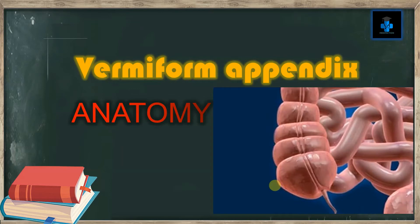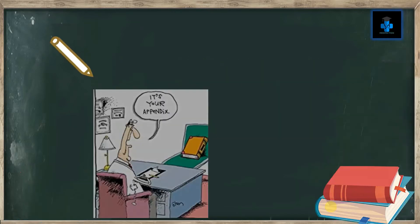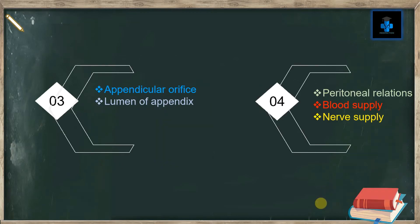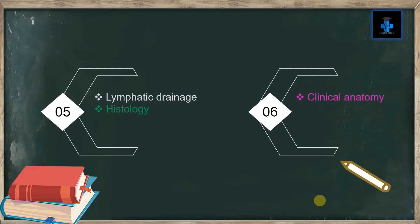Hey guys, welcome to Medifaction. Today let's learn about the anatomy of the vermiform appendix. The appendix, or vermiform appendix, is a muscular structure attached to the large intestine in the human body. In this video, I'm going to enumerate an introduction, dimensions and positions of the vermiform appendix, also the appendicular orifice, lumen of appendix, the peritoneal relations, blood supply, nerve supply, lymphatic drainage, and histology.